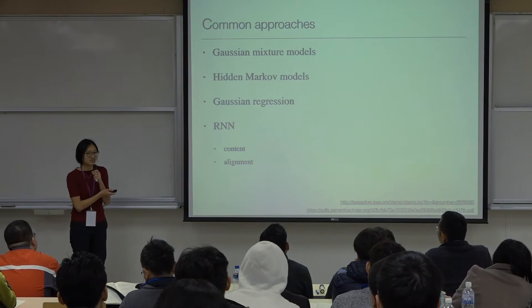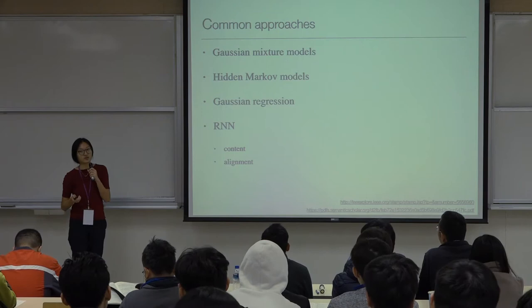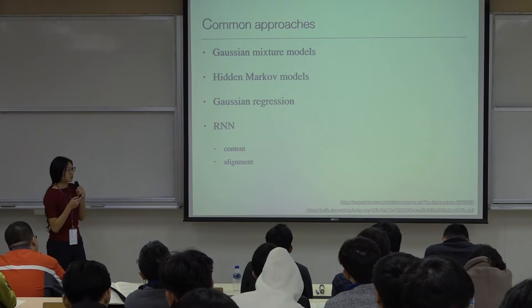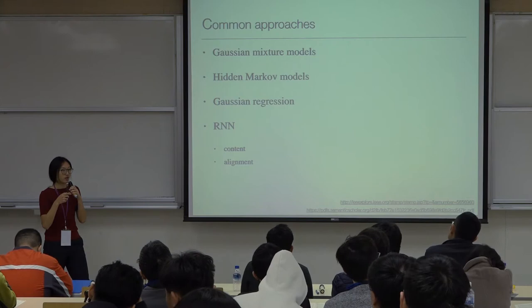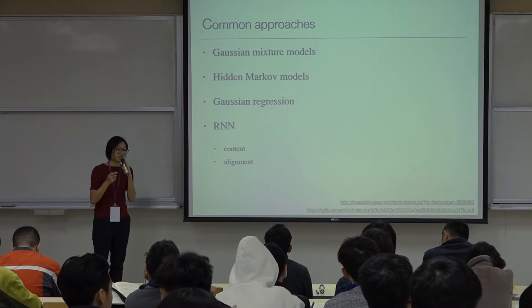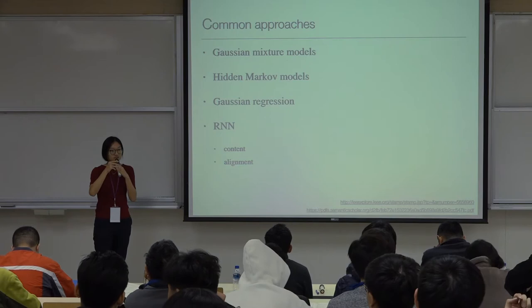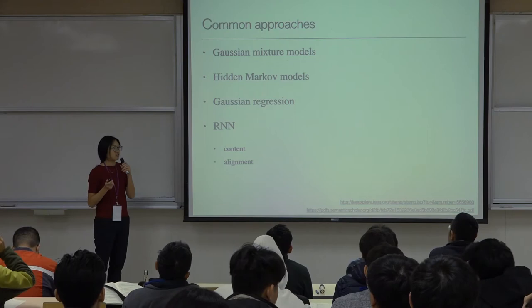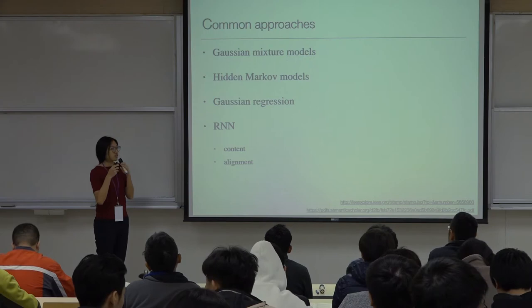There are a couple of approaches for solving this task. More basic ones include Gaussian mixture models, Hidden Markov Models, and Gaussian process regression. More recently, recurrent neural networks have been used. However, if we use RNNs, the dataset has to be content-consistent and also aligned. Alignment means that if one utterance says 'I feel good' and another says 'I feel good,' they need to be temporally aligned — typically using DTW algorithms in preprocessing. We hope that by adding a GAN structure, we can solve voice conversion without requiring parallel data.